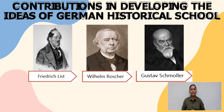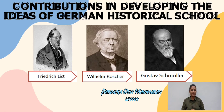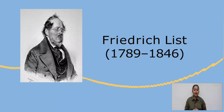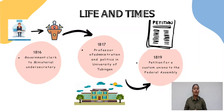Thank you. Greetings to the Doctor and my fellow classmates. I am Parimadhibi Rofa Manimaran, Metric No. 271181. I will continue our group presentation with the contributors in developing the ideas of the German Historical Schools. Friedrich List is known as a forerunner of the historical school. He was inclined neither towards formal study nor towards his father's occupation. In 1816, he became a government clerk and rose to the post of ministerial undersecretary.